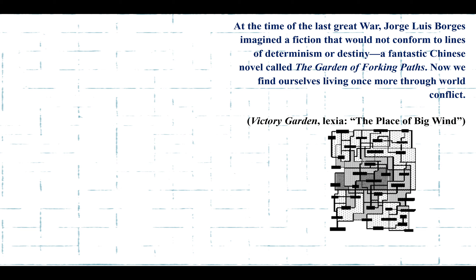To start with, I'd like to read one of the text passages that appears in the novel Victory Garden. It is a clear and specific reference to Jorge Luis Borges, and it is going to be one of the fundamental bases of the comparison between this electronic novel — a novel-game, as we're going to see how it relates to both novels and games — and Borges' own short story.